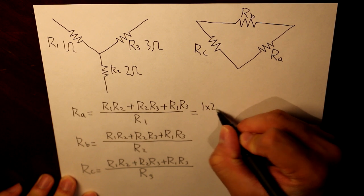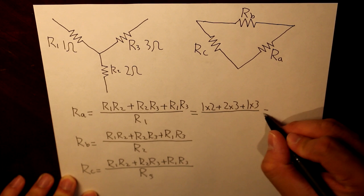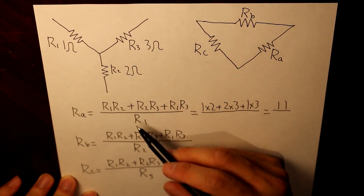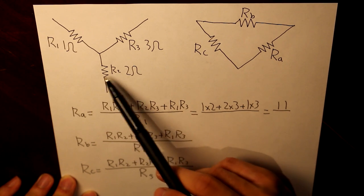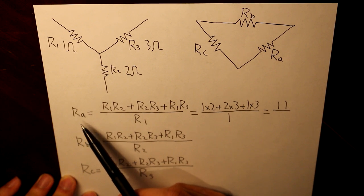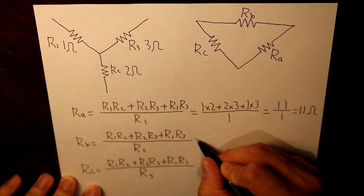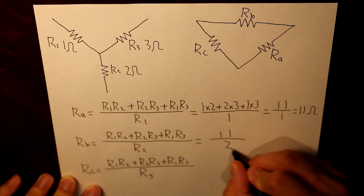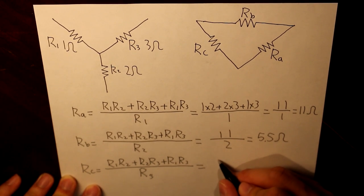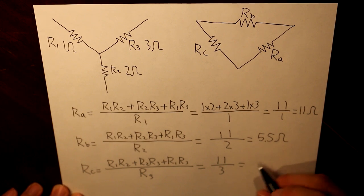So the numerator is 1 times 2 plus 2 times 3 plus 1 times 3, which equals 11. The numerator is the same for all three equations. For RA, the denominator is R1 which is 1, so RA equals 11 divided by 1, giving us 11 ohms. For RB, the denominator is R2 which is 2, giving us 5.5 ohms. RC is equal to 11 divided by R3 which is 3, giving us approximately 3.67 ohms.